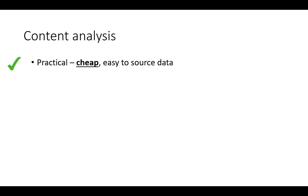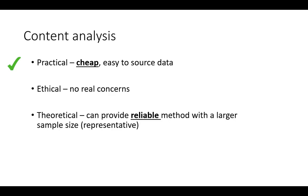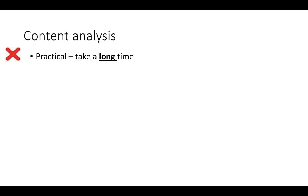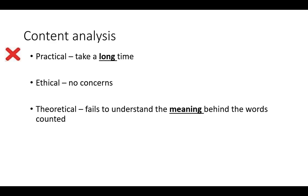Strengths of content analysis: data is cheap and easy to source — just buy a newspaper or book. It is ethical as a secondary source. It is more reliable because you can repeat it with multiple texts, newspapers, or books, giving a larger sample size. However, it can take a long time to carry out.